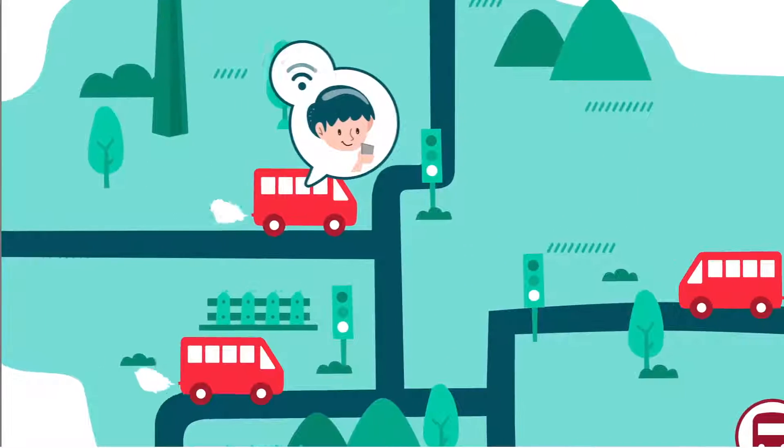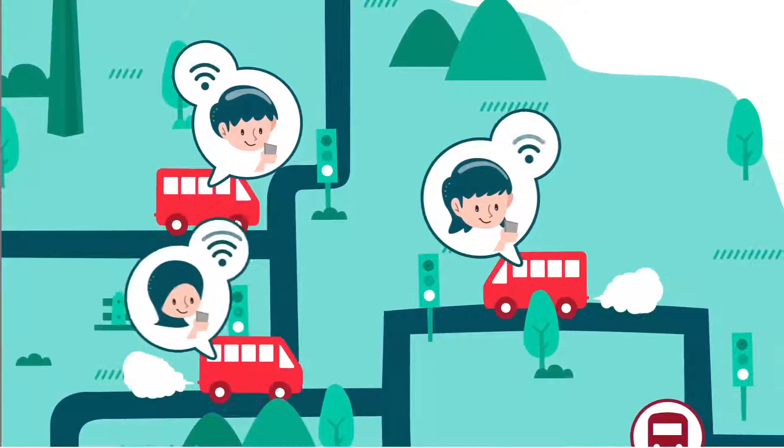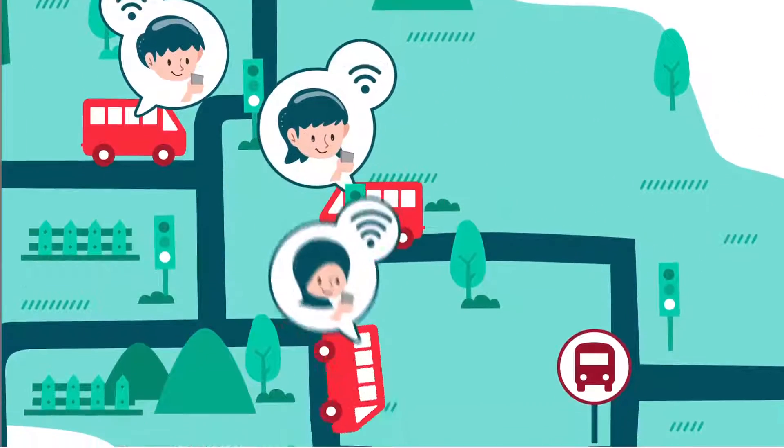Where Is It is crowd-powered and relies on public bus passengers sharing their bus trips to help others obtain bus arrival times.